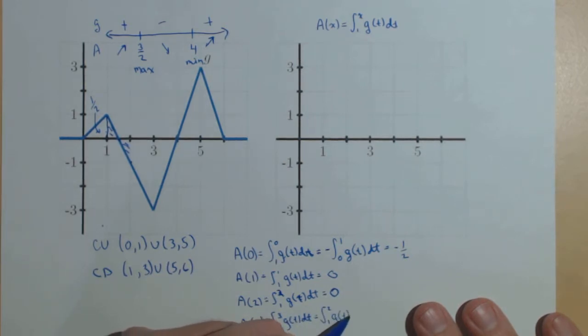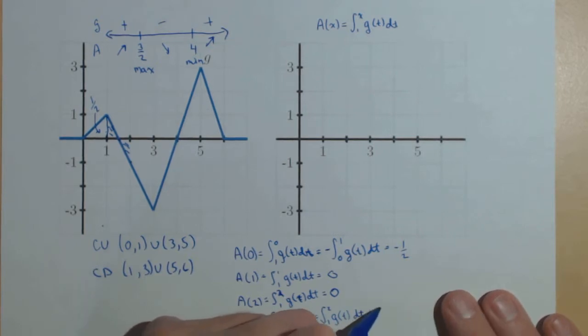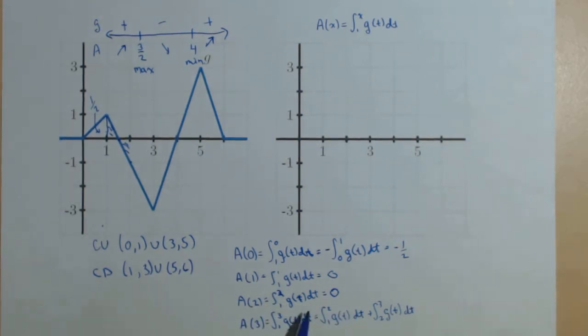1 to 2 of g of t dt plus 2 to 3 of g of t dt. The reason that's important, we've already done this. That's 0. So, this is 0 plus our net change from 2 to 3.